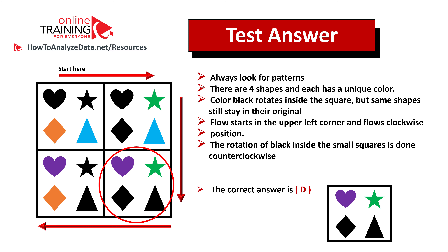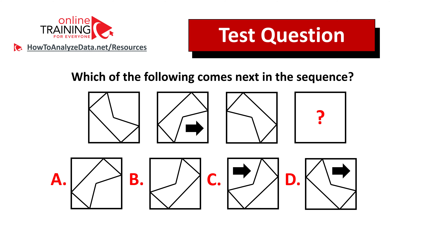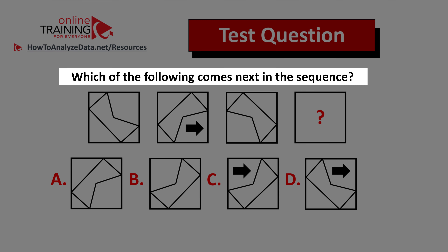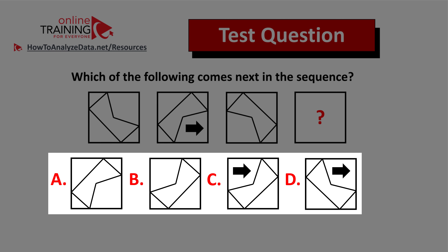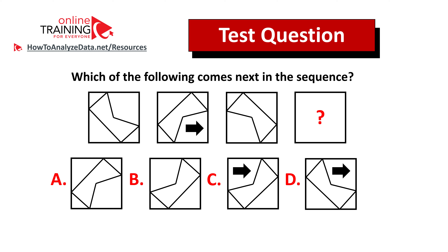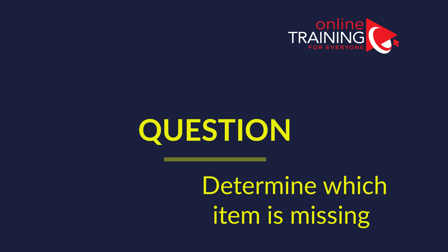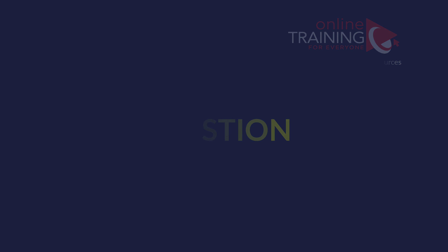Here's a question you can try to solve on your own: which of the following comes next in the sequence? You're presented with four different squares, each with another figure inside, and four possible choices — A, B, C, and D. Give yourself 10 to 15 seconds. Always look for patterns. If you've figured out the answer, post it in the comment section along with your rationale so I can give you feedback.